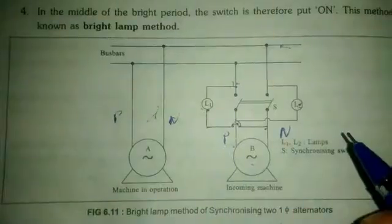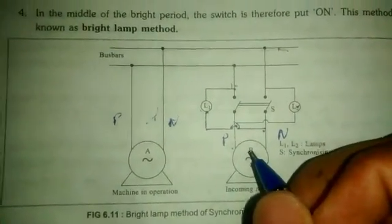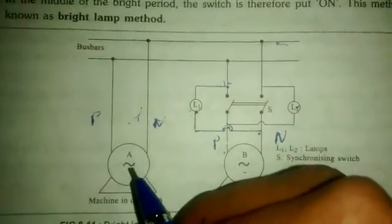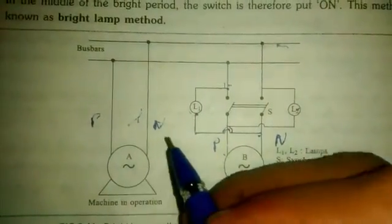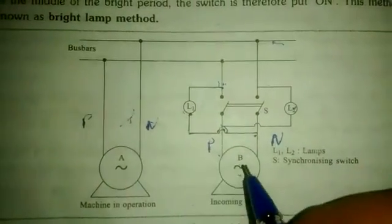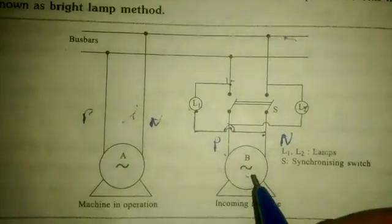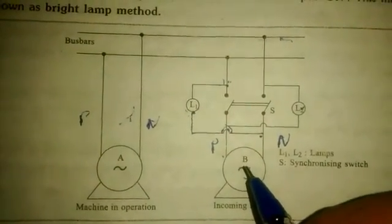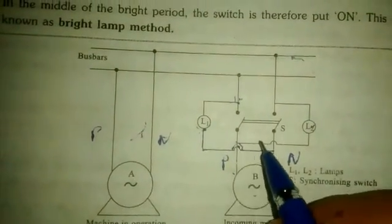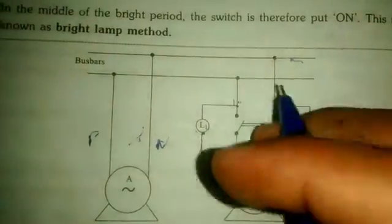The second case is when the incoming machine and the operating machine are both at equal speed, producing a constant 400V. The constant brightness is equal. The L2 lamp is the same and L1 lamp is equal — equal brightness.